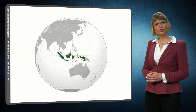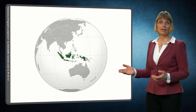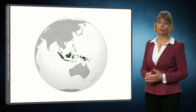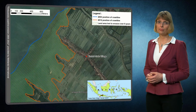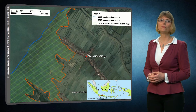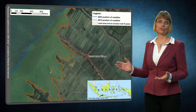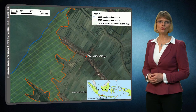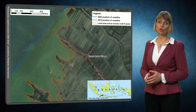Let us consider the example of mangrove restoration in Indonesia. In some parts of Indonesia, mangroves were removed to make room for aquaculture ponds. The loss of mangroves, however, resulted in massive land erosion and total villages were forced to move inland. In addition, the important nursery function of mangroves for several fish species was lost.